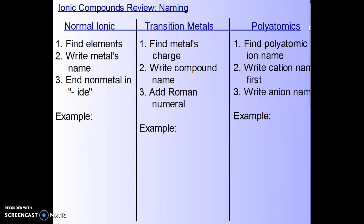In reviewing, when we're naming a normal binary, meaning there's only 2 elements in the compound, ionic compound, we just end the name of the non-metal in ide. When we get to transition metals, we have to add that Roman numeral to show us the charge of the metal. And then finally, when we get to polyatomics, we're going to have to look up whatever the polyatomic ion is called to be able to write it in the name. If the polyatomic is a cation, we would write the name of the polyatomic ion first because the positive thing always comes first in the name. If it's an anion, which is more common, the polyatomic name comes next in the second part of the name.